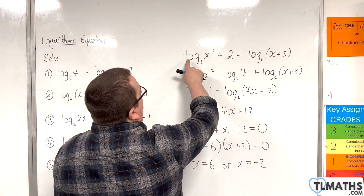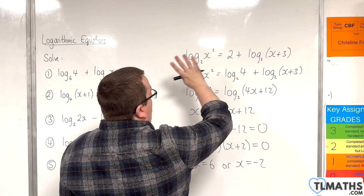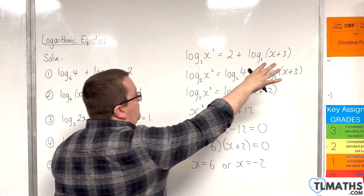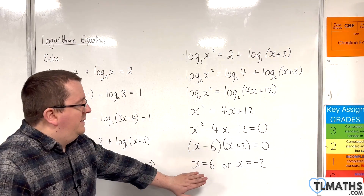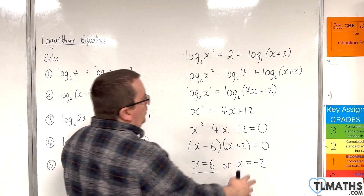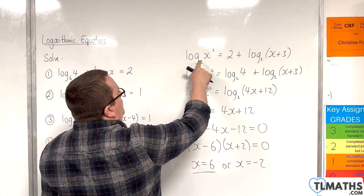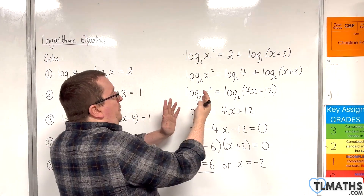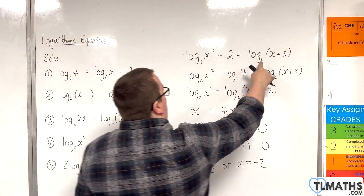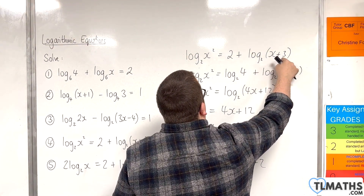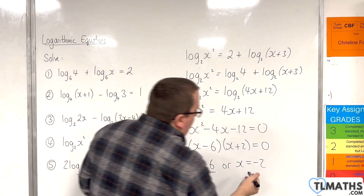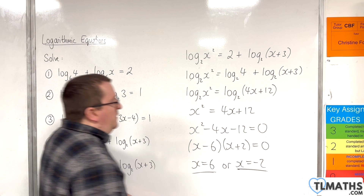If x is 6, we get log base 2 of 36 — that's fine — and log base 2 of (6 plus 3), so log base 2 of 9 — that's fine. So x equals 6 definitely works. For x equals minus 2, we have log base 2 of (minus 2) squared, so log base 2 of 4 — that's fine — and log base 2 of (minus 2 plus 3), so log base 2 of 1 — that's fine also. So both solutions work in the original equation.